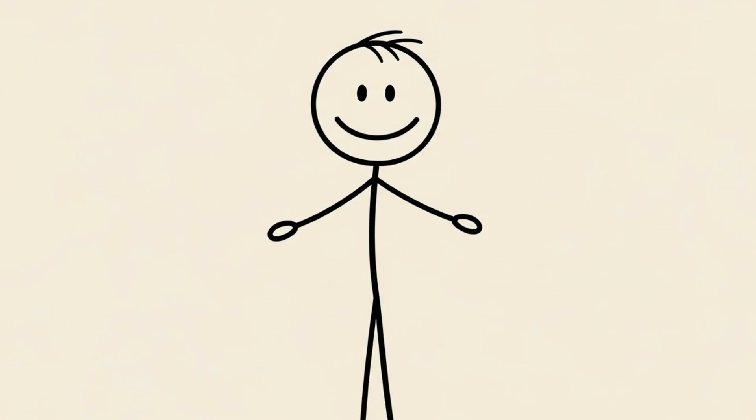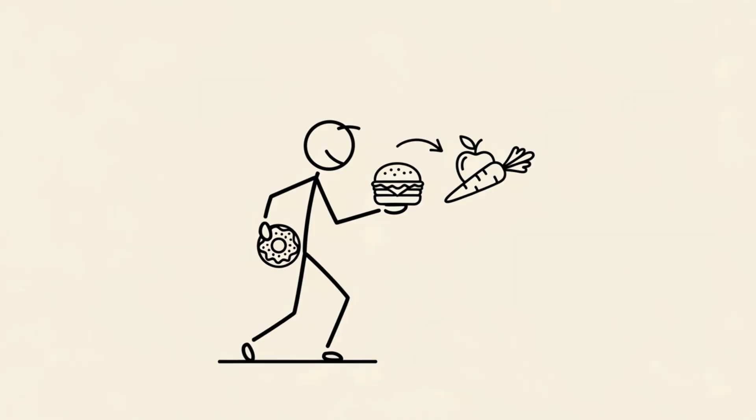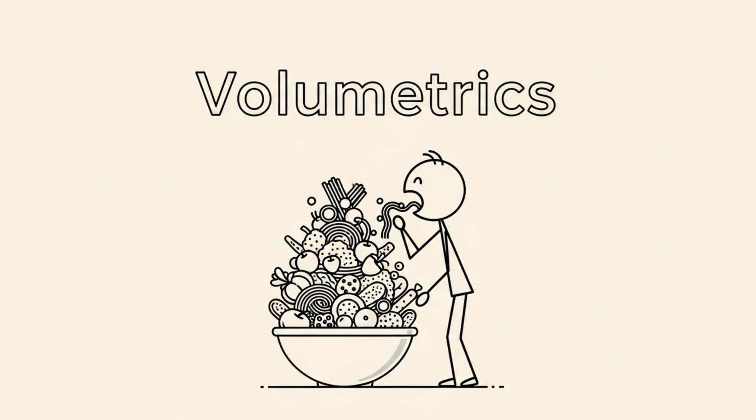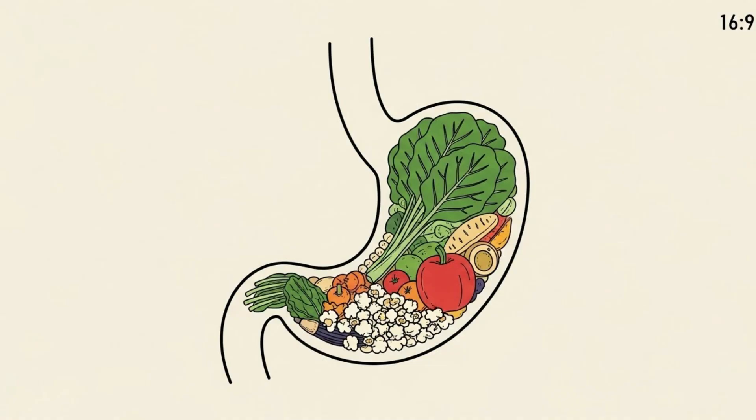Let's talk about food choices. You do not need to suffer. You need to swap. This is the concept of volumetrics. You want to eat foods that take up a lot of space in your stomach but have very few calories.